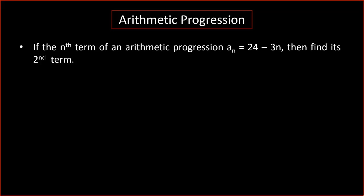The question is: if the nth term of an arithmetic progression an is equal to 24 minus 3n, then find its second term.